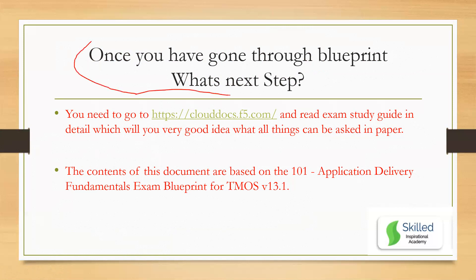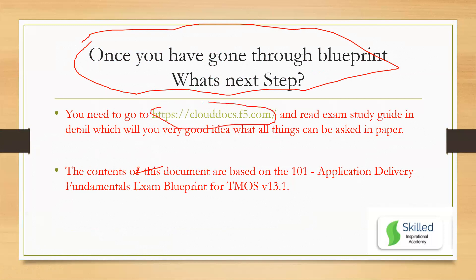Once you've gone through the Philip Johnson book and the blueprint, the next step is the official study guide prepared by F5. Go to clouddocs.f5.com and search for F5 101 — you'll get a very good idea of how things are asked. The content of this document covers all blueprint topics for TMOS 13.1, which is the version the exam is based on. This is a very good link and they have updated it with the 101 content on clouddocs.f5.com.